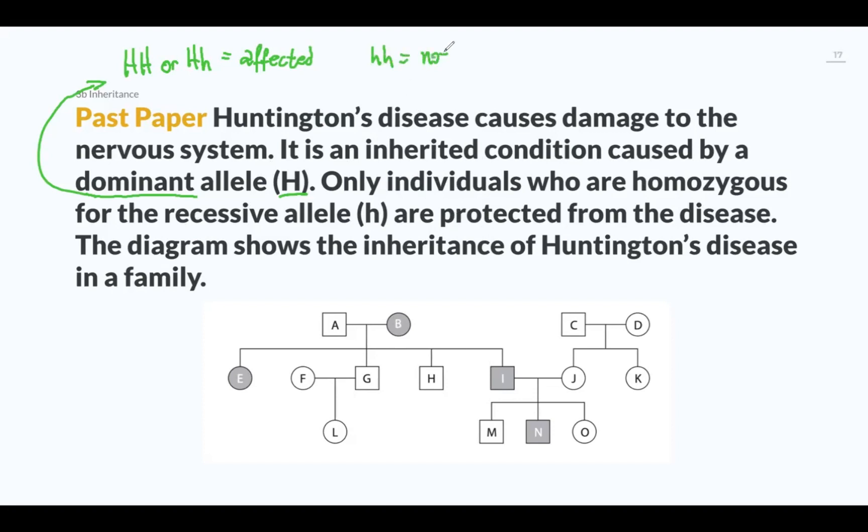So the diagram shows the inheritance of Huntington's disease in a family, and that's important because family pedigrees can only show you inheritable conditions, inheritable traits. You cannot see, I don't know, haircuts or something that is not inheritable with a pedigree chart. That doesn't make any sense.